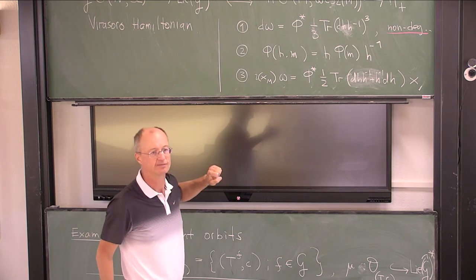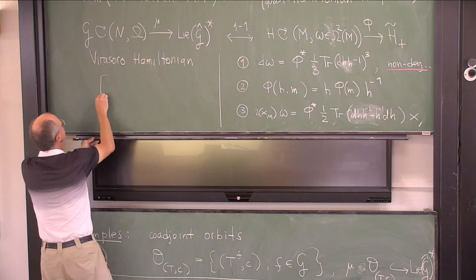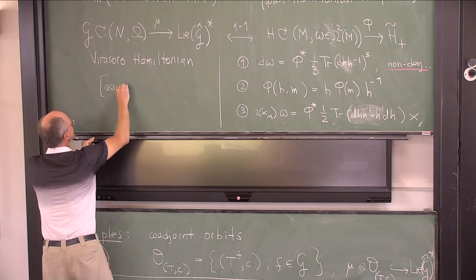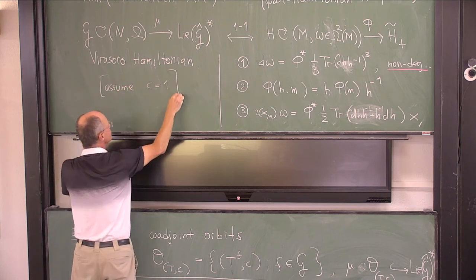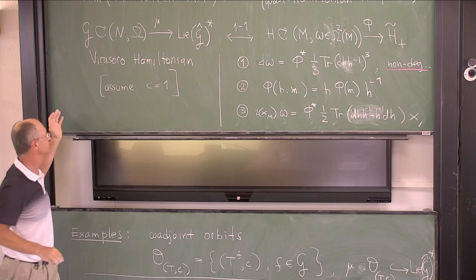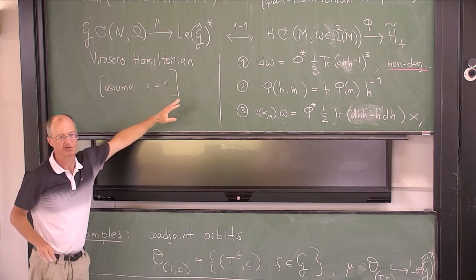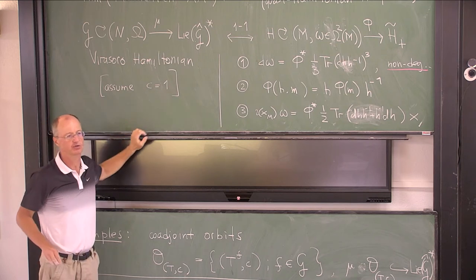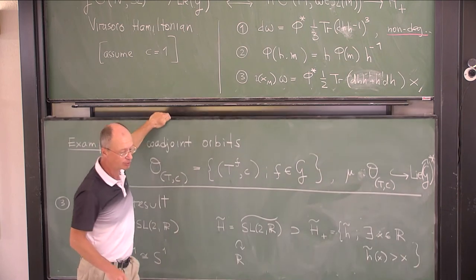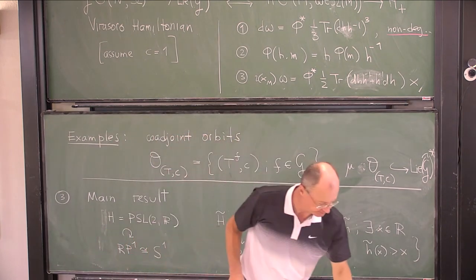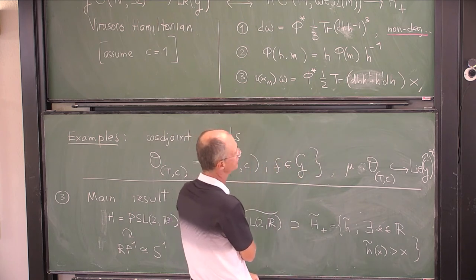Wait, a question. Do you suppose that C is equal to 1 in that? Yeah, I suppose C... For different non-zero C's, the theories are more or less the same. Yeah, we assume C is non-zero and we can normalize it to be equal to 1.